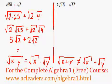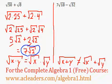And finally, 5 root 2 plus 2 root 2. 5 plus 2 is 7 root 2. And this is our final answer to the addition of these two radicals.